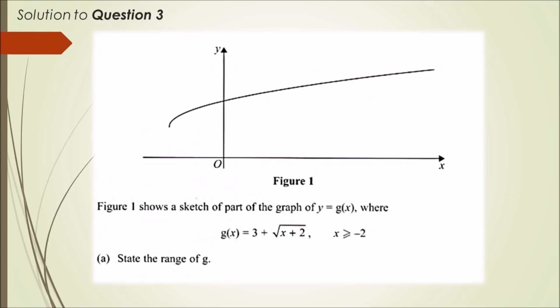The function g(x) is given by 3 plus the square root of x plus 2, and this is valid for x greater than or equal to minus 2. Part (a) asks us to state the range of g. What exactly is the range? Well, we know that range is pretty much all the values that g can actually take for a given domain.